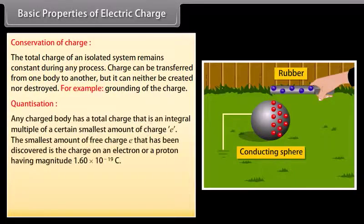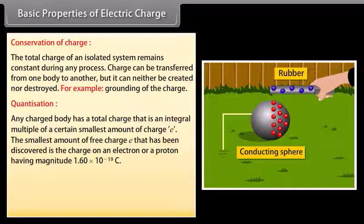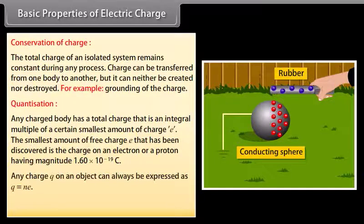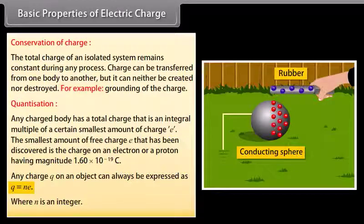Quantization: Any charged body has a total charge that is an integral multiple of a certain smallest amount of charge e. The smallest amount of free charge e that has been discovered is the charge on an electron or a proton, having magnitude 1.60 × 10⁻¹⁹ coulomb. Any charge q on an object can always be expressed as q = ne, where n is an integer.